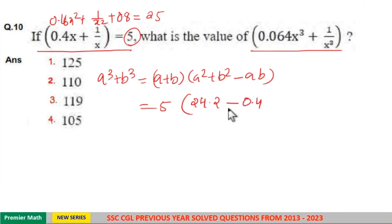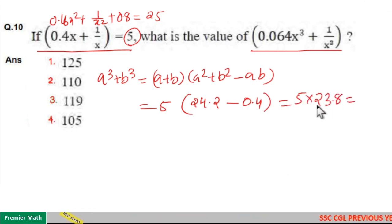So 24.2 - 0.4 = 23.8. Then 5 × 23.8: 5 × 20 = 100, 5 × 3 = 15, 5 × 0.8 = 4, so 100 + 15 + 4 = 119. Option 3 is your answer.